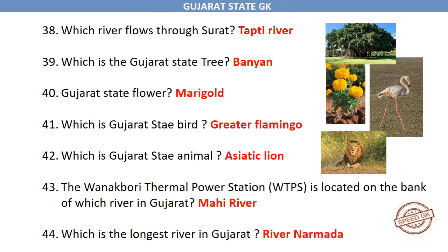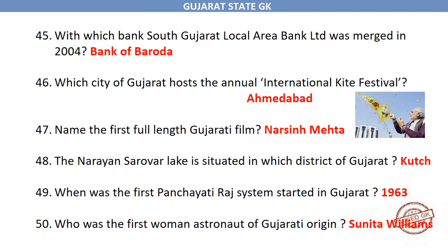Which is the longest river in Gujarat? River Narmada. With which bank was South Gujarat Local Area Bank Limited merged in 2004? Bank of Baroda. Which city of Gujarat hosts the annual International Kite Festival? Ahmedabad. Name the first full-length Gujarati film: Narsinha Mehta. The Narayan Sarovar Lake is situated in which district of Gujarat? Kutch. When was the first Panchayati Raj system started in Gujarat? 1963.